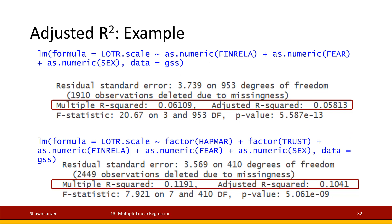Looking at the regression model output on screen: the multiple R-squared is 0.061 and adjusted R-squared is 0.058. Note that adjusted is a little bit smaller than multiple — this is expected, as it penalizes the model for having additional variables. In terms of percentages, it's a difference of 6.1% against 5.8%. The residual standard error is approximately 3.7.